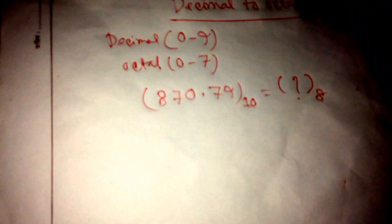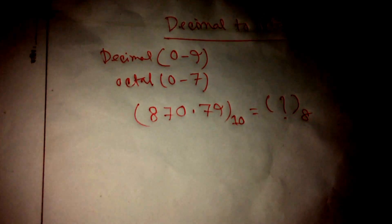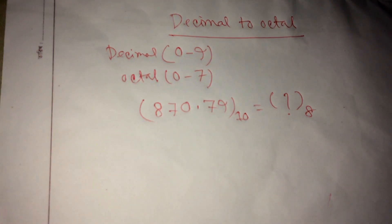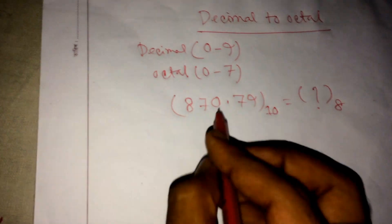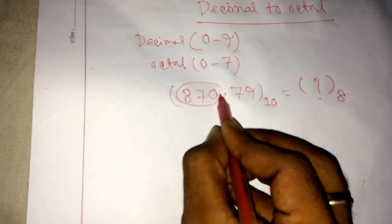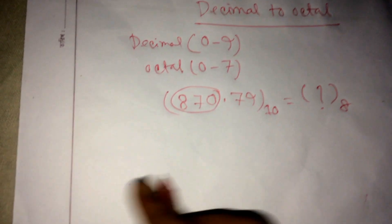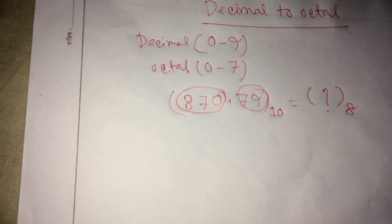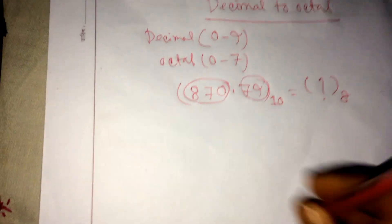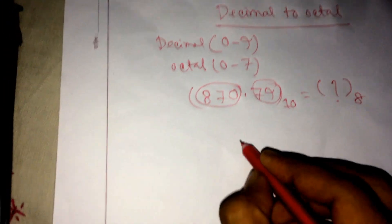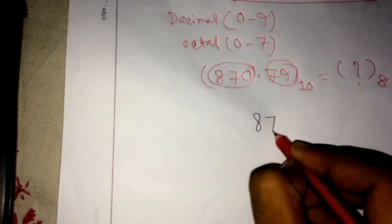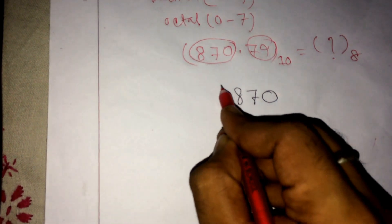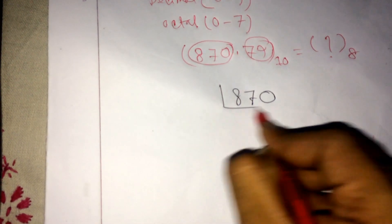I'm going to show you an easy way to convert decimal to octal. First we choose the integer portion and then we choose the float or fraction portion. So first we do 870 divided by 8.